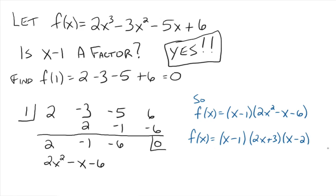I'm writing it down here in this completely factored form. We've just taken a third degree polynomial and factored it into a product of three factors. And these three factors, look at each part: x - 1, 2x + 3, and x - 2. Those are all linear expressions.